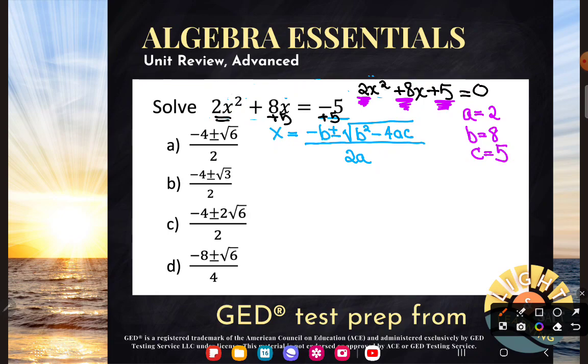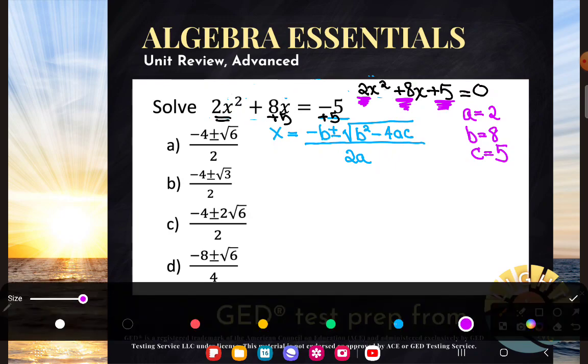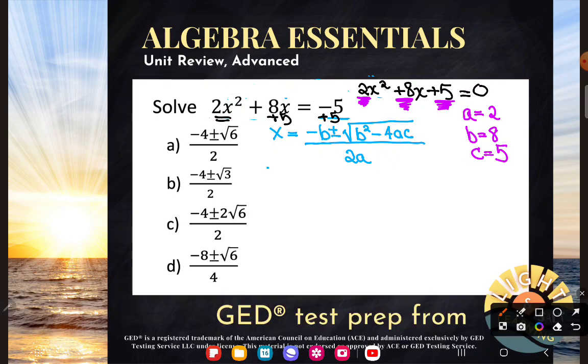And now I can substitute into this formula. So x is equal to negative b, the opposite of b. Well, we said b was 8, so it'll be negative 8. Plus or minus the square root of b squared. So I'm going to be doing 8 squared. Minus 4 times a is 2. c is 5. All over 2 times a.